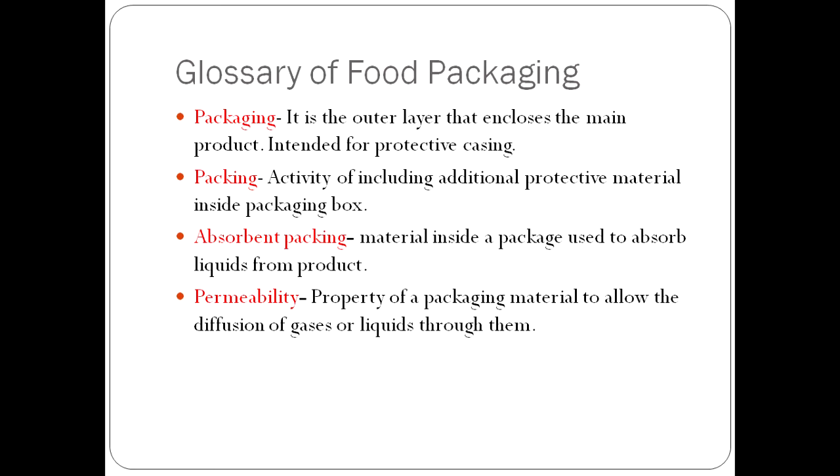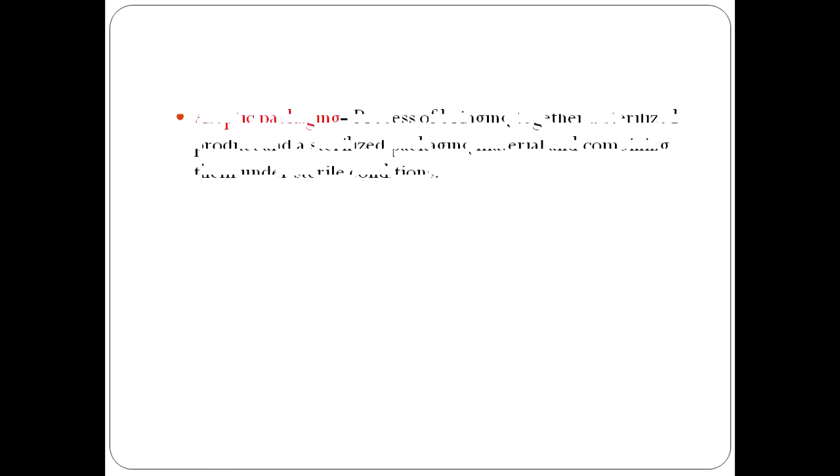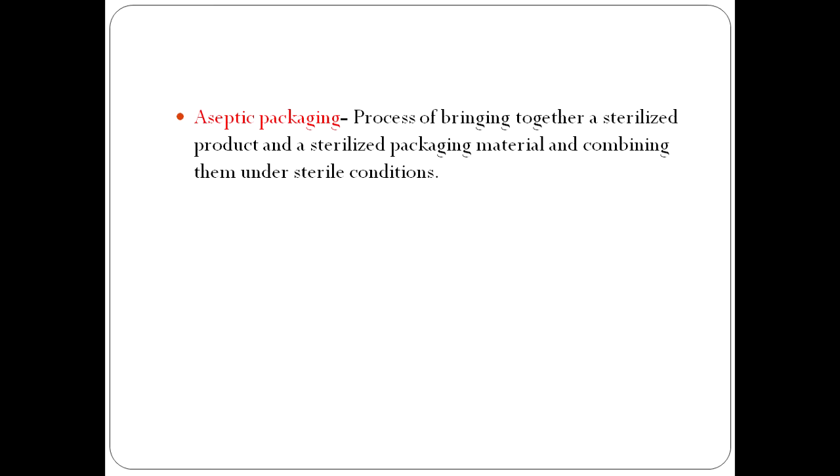Safety packaging is a process of bringing together a sterilized product and a sterilized packaging material. This process happens entirely in a sterile environment. Please remember three things: the container should be sterile, the product should be sterile, and the environment should be sterile. Bringing these three elements together and packing under those conditions is called safety packaging.